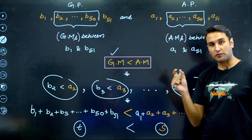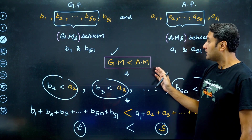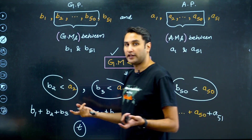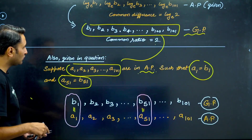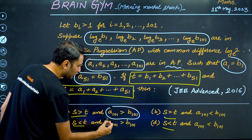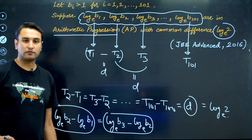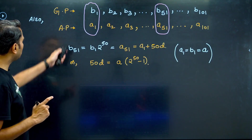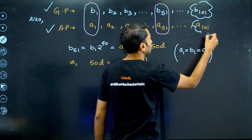The other way to solve - if you search for this problem on the internet, you'll find a lengthier method where you actually find out each summation separately and then compare. I directly used the property of arithmetic mean and geometric mean. Now let's come to the other part of the problem: comparing a101 and b101 - comparing the last terms of the two sequences, one GP and one AP.